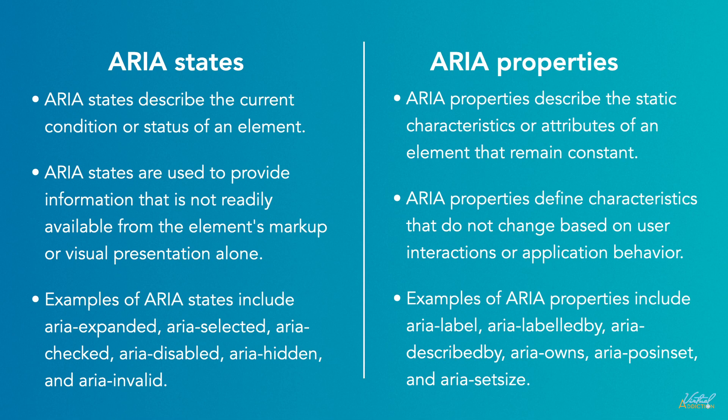ARIA properties, on the other hand, describe the static characteristics or attributes of an element that remain constant. They convey information that is not implied by the element's natural semantics, and they define characteristics that do not change based on user interactions or application behavior. Examples of ARIA properties include aria-label, aria-labelledby, aria-describedby, aria-owns, aria-posinset, and aria-setsize.